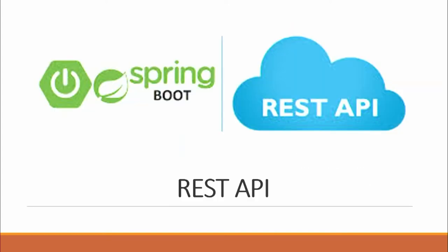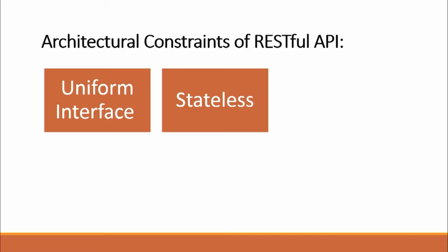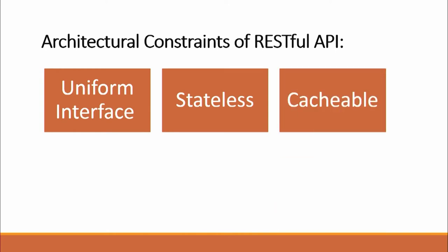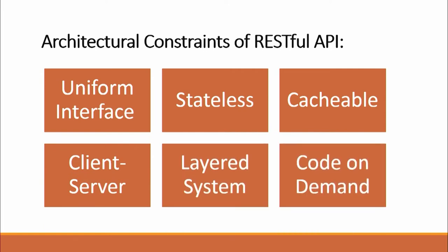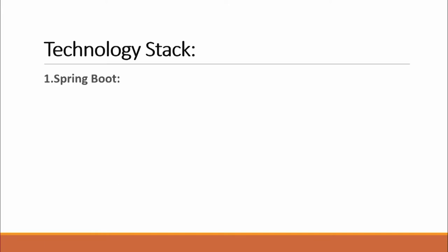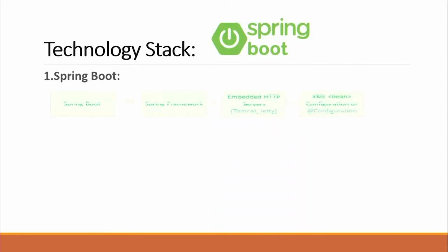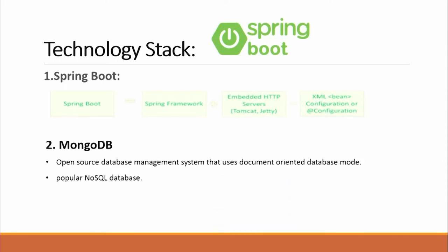REST stands for Representational State Transfer. The architectural constraints of a RESTful API are: uniform interface, stateless, cacheable, client-server, layered system, and code on demand. Uniform interface is the key constraint that differentiates REST APIs from non-REST APIs. The technology stack we used for the REST API was Spring Boot and MongoDB. We used MongoDB with Spring Boot because Spring Boot has a powerful MongoDB connector, and the data is stored in MongoDB in the form of JSON.